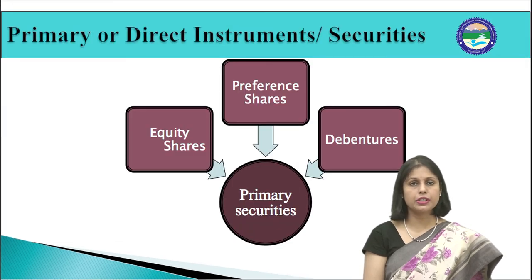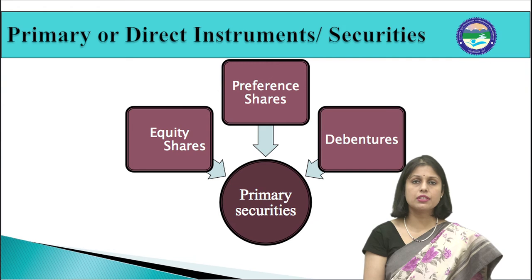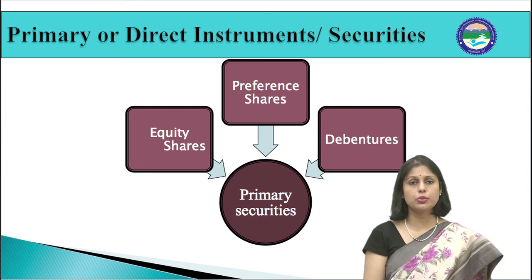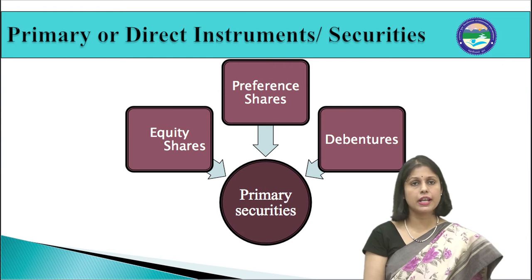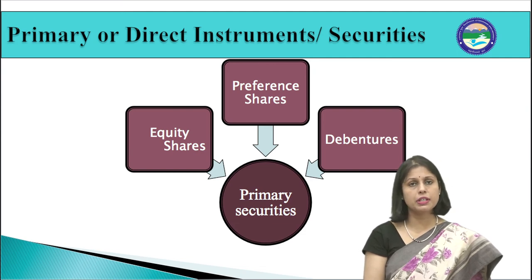Primary or direct securities are securities issued by non-financial economic units. The main types of primary securities are ordinary equity shares, preference shares, and debentures or bonds. Equity shares are ownership securities representing risk capital — equity shareholders bear the risk, are residual claimants on income and assets, and participate in management. A debenture is a creditorship security; debenture holders receive pre-specified interest and have first claim on assets but have no right to vote in company meetings. Different kinds of debentures include participating debentures, convertible debentures, and non-convertible debentures.